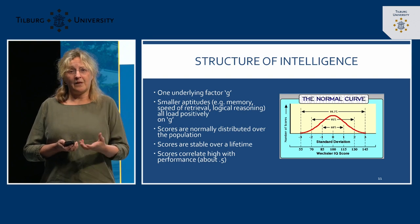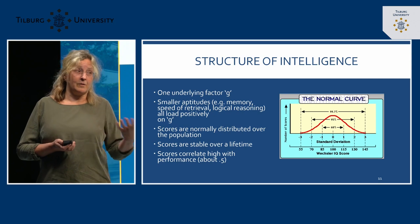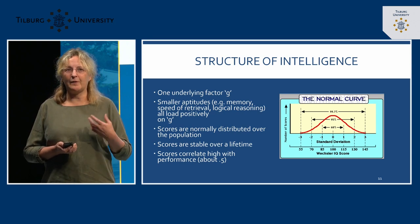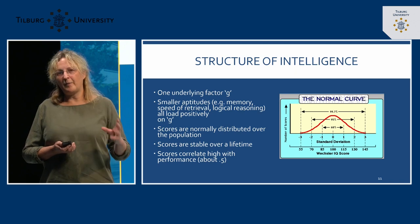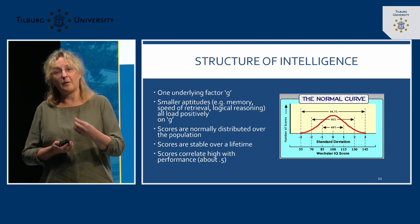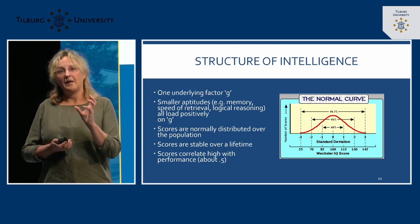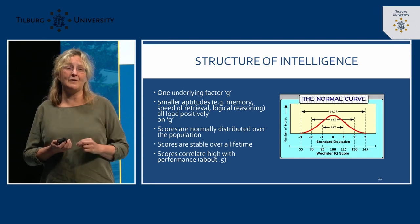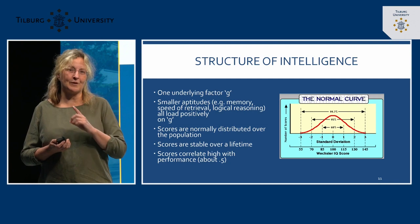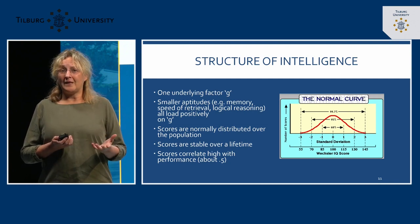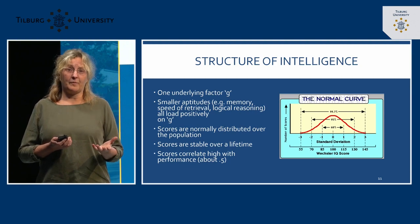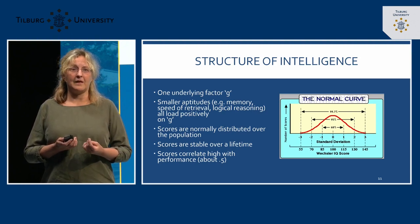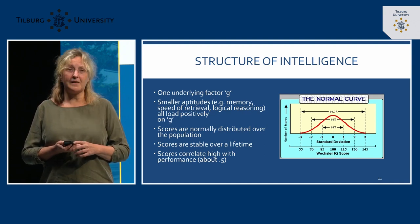Usually if you want to understand your intelligence, you go to a psychologist or take an online test consisting of many different sub-tests — memory tests, speed of retrieval, logical reasoning. If you compare the performance of many people on these tests, you'll see positive correlations between them, meaning people with higher average intelligence tend to perform better on all these tests. This is statistics — it's not true for every individual, but for people on average. These scores are normally distributed over the population, with the majority of people clustering around the average and small groups at the very high and very low ends.